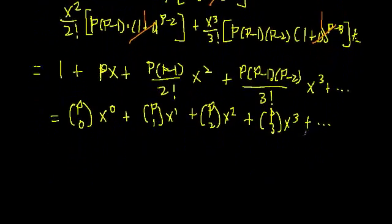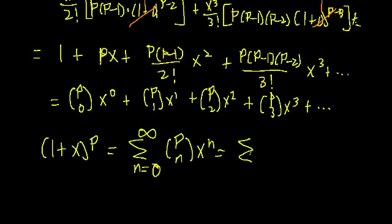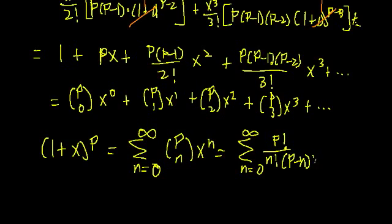It should be fairly obvious what our series is. We can rewrite the function (1 + x) to the p power as the sum from n equals zero to infinity of (p choose n) times x to the n. Or equivalently, using the factorial form, as the sum from n equals zero to infinity of p factorial over n factorial times (p minus n) factorial, all times x to the n.